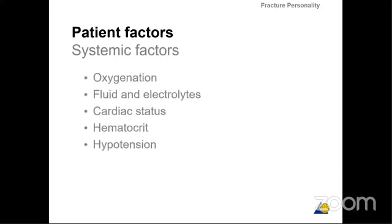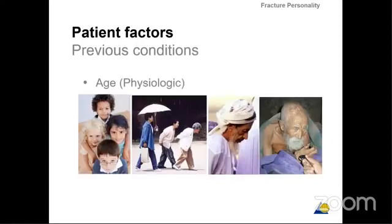Patient factors include oxygenation, fluid and electrolytes, cardiac status, hematocrit, and hypotension. The physiologic response of the patient to the injury is very important to take into consideration. The previous conditions, the age, and the physiologic age all matter. You cannot treat the same fracture — for example, a transverse humeral fracture — the same way in a young boy, an elderly person, or an old person. It is very different depending on patient factors, and the type of treatment will differ from one patient to another.